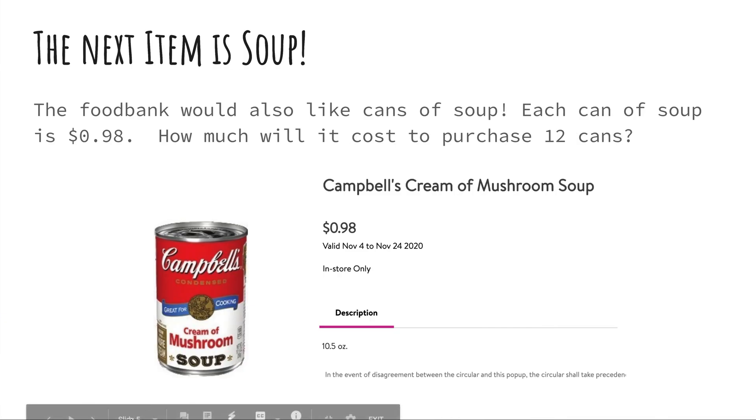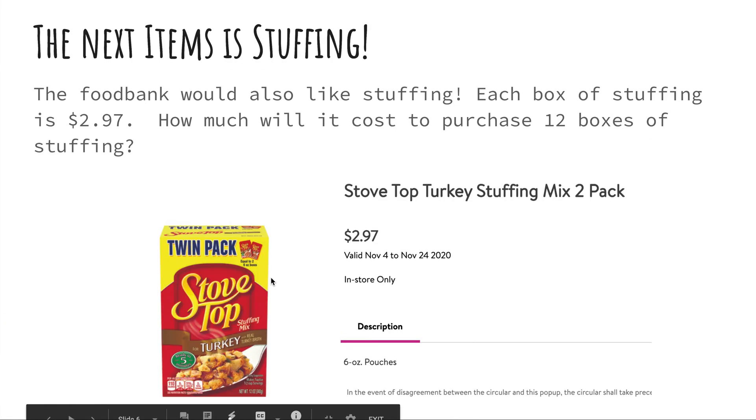Okay, let's go to the next one, which you already got a preview of. And that's going to be if you get stuffing. Everybody loves stuffing. Well, most people anyways. But at least from what I've seen, I like stuffing. But if you're getting stuffing for this food pantry, notice the price here. Each box of stuffing is $2.97. How much will it cost to purchase 12 boxes of the stuffing? Okay, so this is definitely going to be a pricier item, isn't it? Go ahead and try that now, guys. $2.97 times 12.